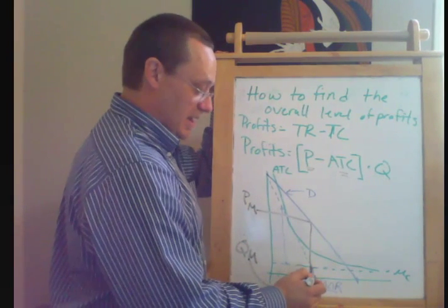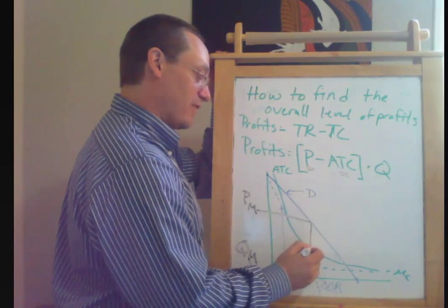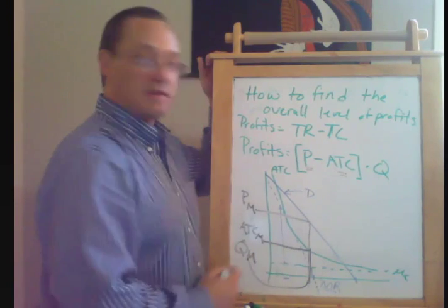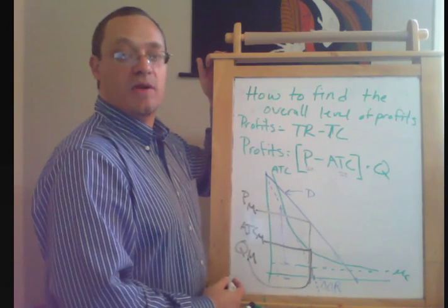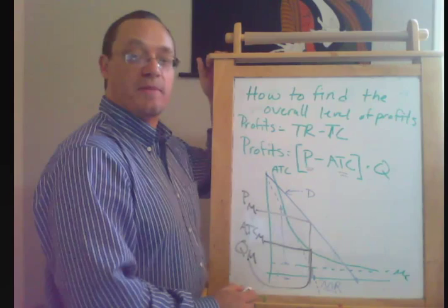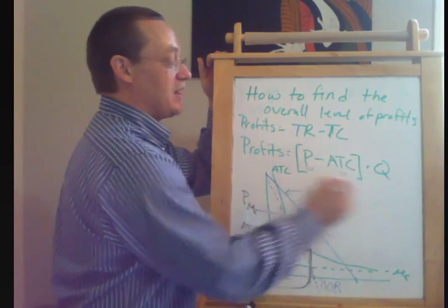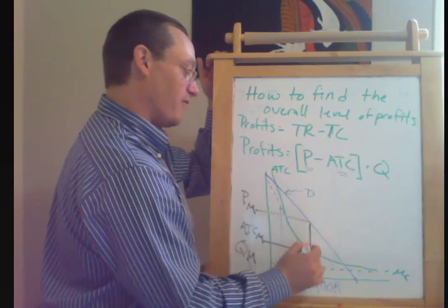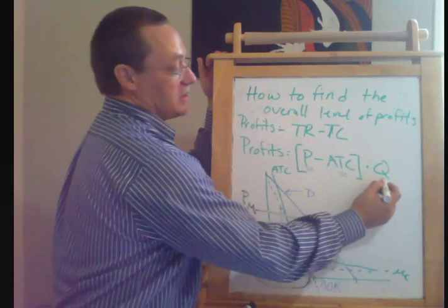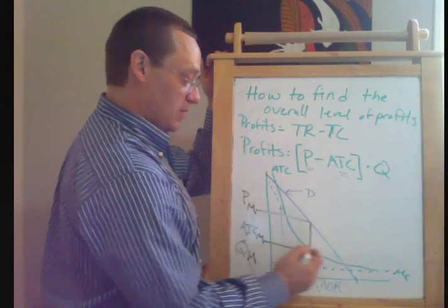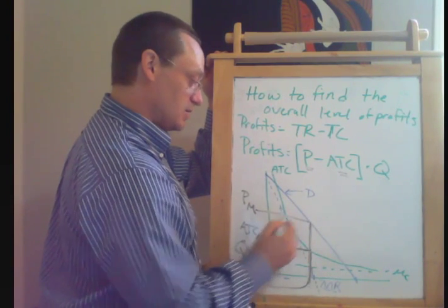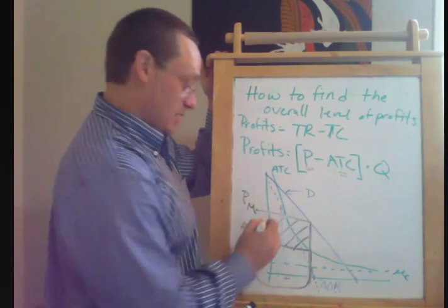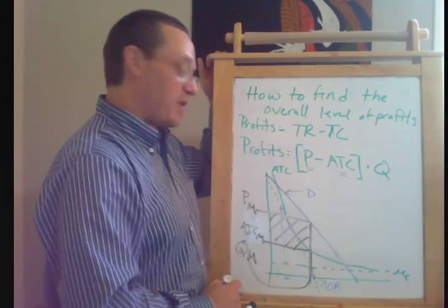And we take this quantity and look up to the average total cost curve. And that is the average total cost that the monopolist incurs when they produce this profit maximizing quantity. So this bracketed term here is this vertical distance here. And quantity is the horizontal distance here. So that shaded box there is the monopolist's total profits.